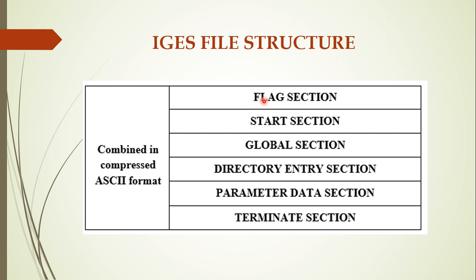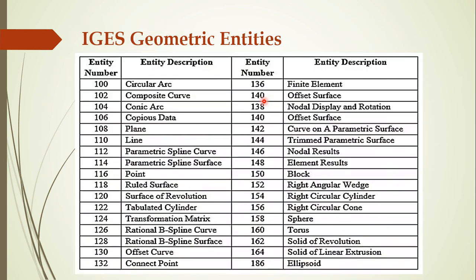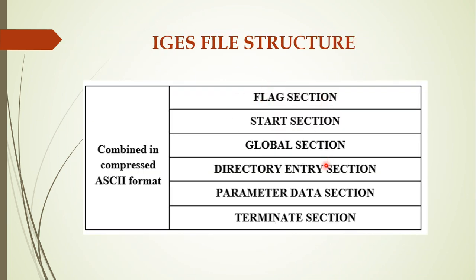The flag section is actually a header file for the IGES data. Just like writing a chapter heading — for example, 'Chapter One: Introduction to CAD' — the flag section is an introductory section serving as a header file for the IGES file format. The next sections are the start section and the global section.